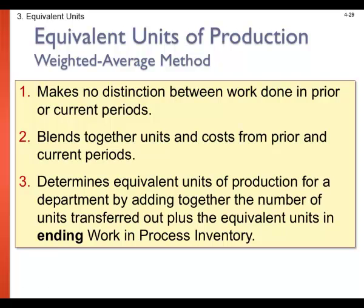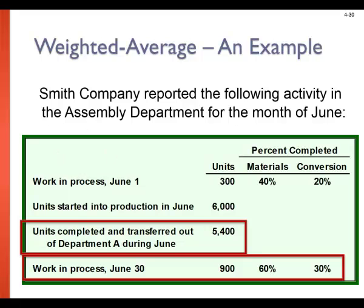There are different methods for equivalent units of production, but let's stay focused on the weighted average method. Under this method, we make no distinction between work done in a prior or current period — we blend together the units and costs from prior and current periods. We determine equivalent units of production for a department by adding the number of units transferred out plus the equivalent units in the ending work in process. Conversion costs — if you remember — are labor and manufacturing overhead used to actually convert materials into a product.